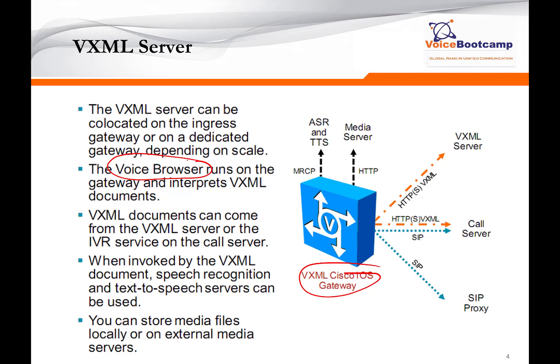Think of Internet Explorer or Firefox as your Cisco router when it comes to the VXML voice browser. The router will send an HTTP request to the VXML server, and the VXML server will respond by sending the necessary messages. Whatever the result is, the router will intercept and process it back to the caller. A VXML document can come from a VXML server or an IVR service on the call server. When you invoke the VXML document for speech recognition, the servers can be used for these purposes. You can store media files locally on the IOS gateway, or on any external media server running IIS or Apache web server.